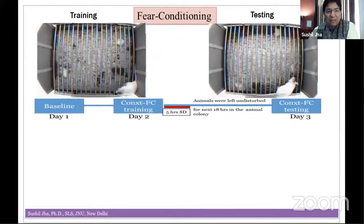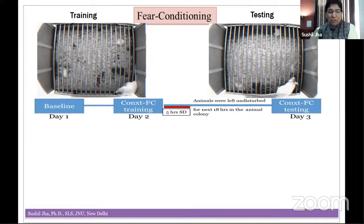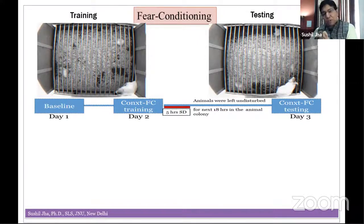We use an animal model and a learning paradigm called associative memory, or conditioned memory — also called Pavlovian conditioned memory. We give the animal a brief electrical shock of a few milliseconds at a microvolt level in a particular ambient. The next day, we bring the animal to the same ambient and see how it behaves. Because shock is a noxious stimulus, the animal shows a fearful response — that is called fear conditioning. In the absence of any shock, just the ambient makes the animal scared. As the saying goes, 'Doodh ka jala chhaj bhi phoonk phoonk ke peeta hai' — that is what conditioning means.